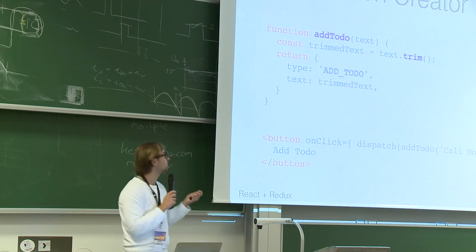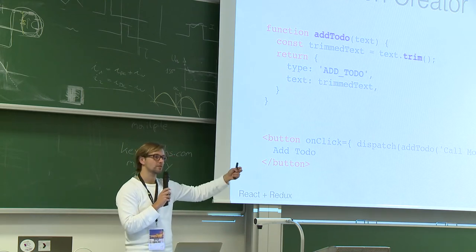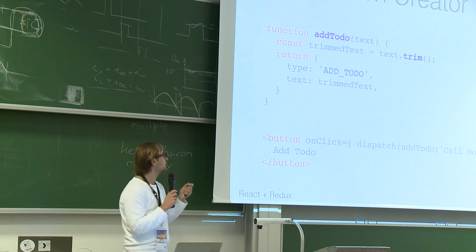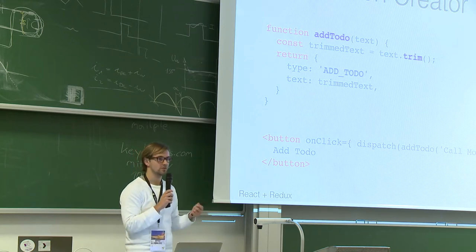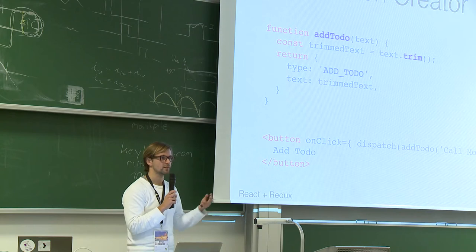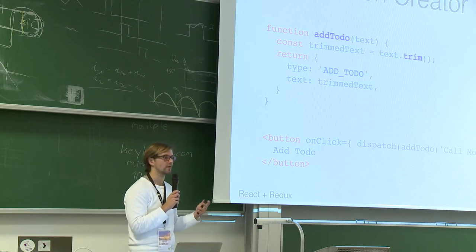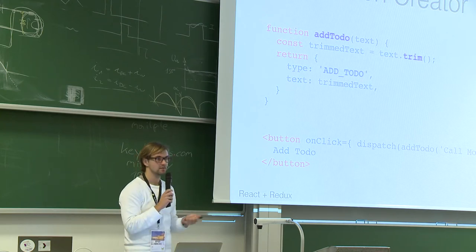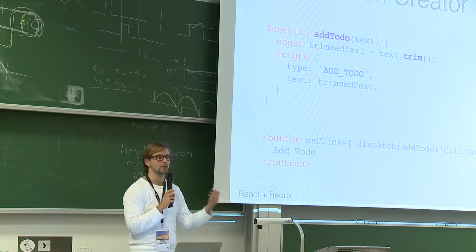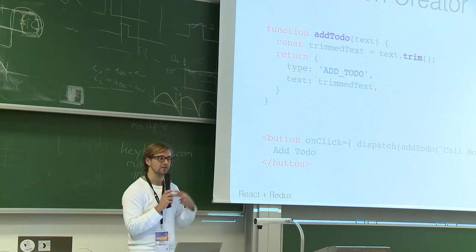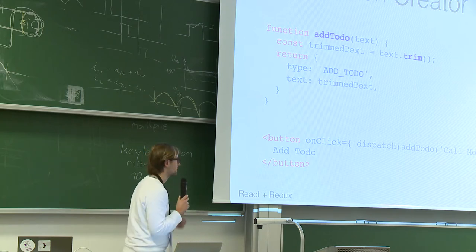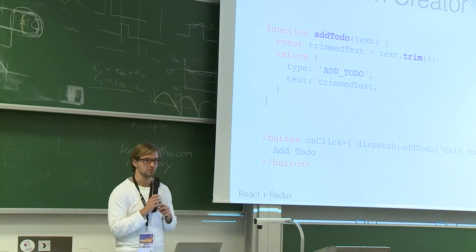For example, you could add a to-do and directly show it on screen as an optimistic update, then in the action creator also make the POST call to create the to-do. In the callback, you have another action — like 'add_todo_server_success' — and you could show additional information that it's synced, or in case of error, take out that to-do item again. This really depends on your application and business logic.